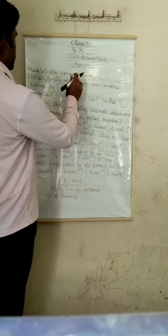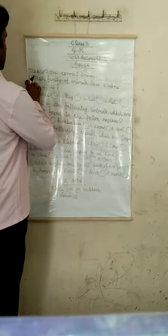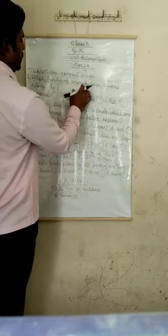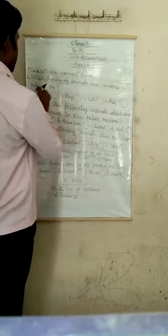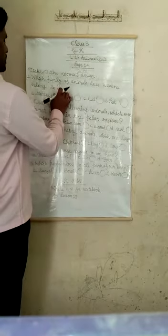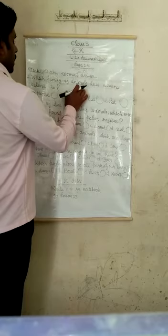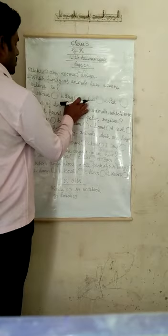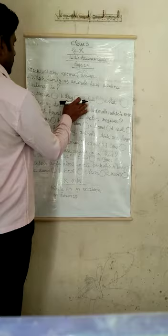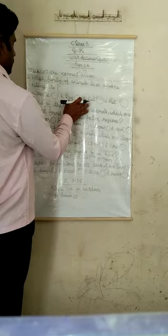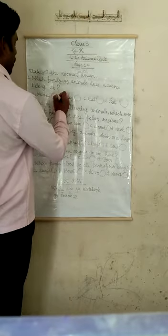So let's start. First: Which family of animals does a zebra belong to? The answer is horse.